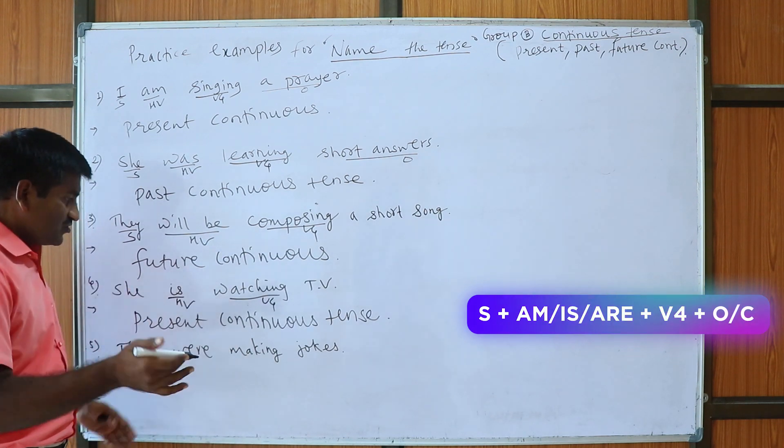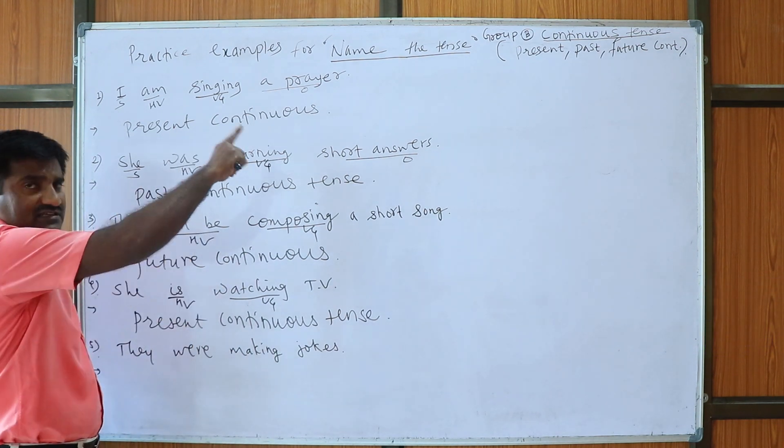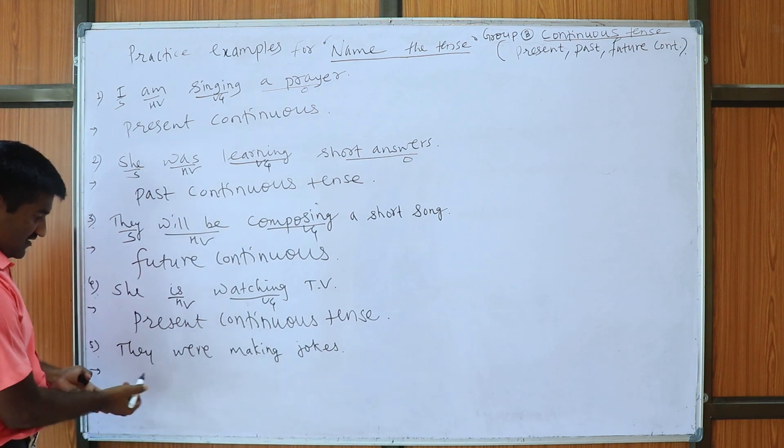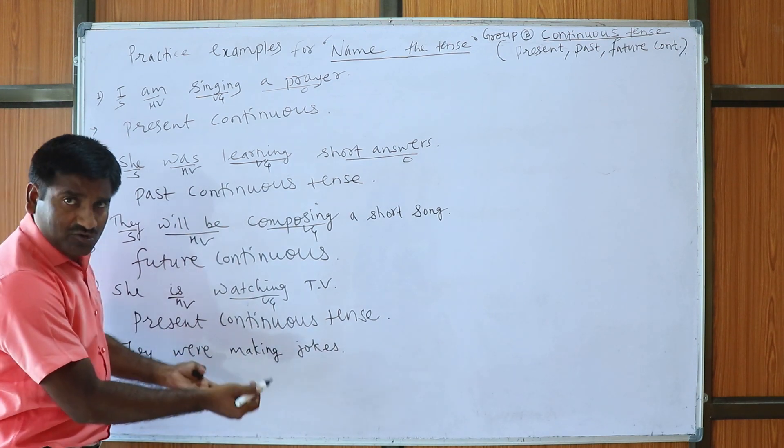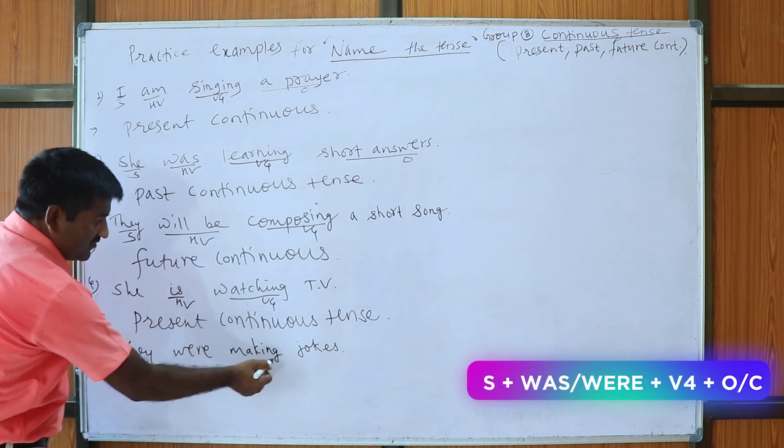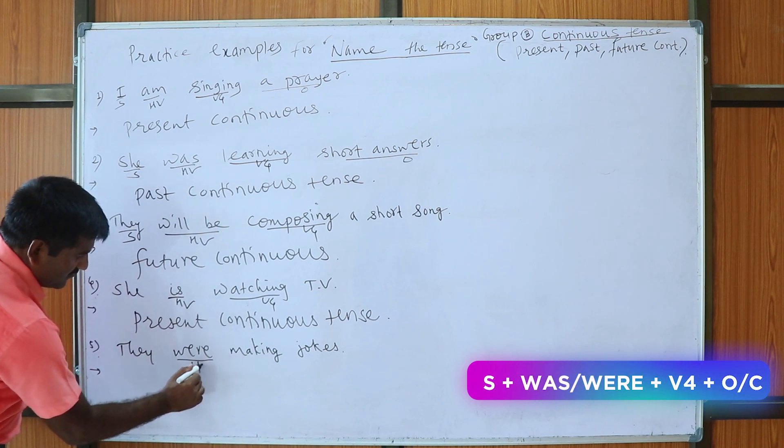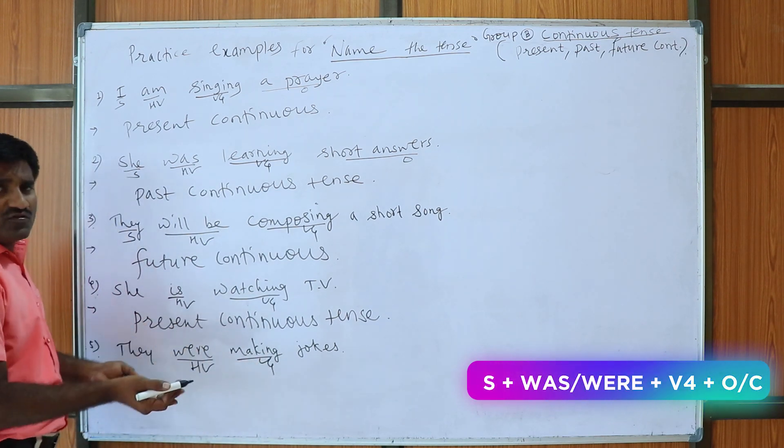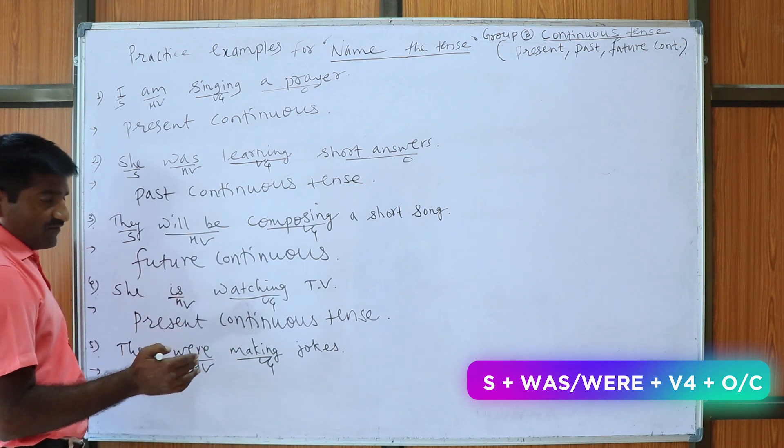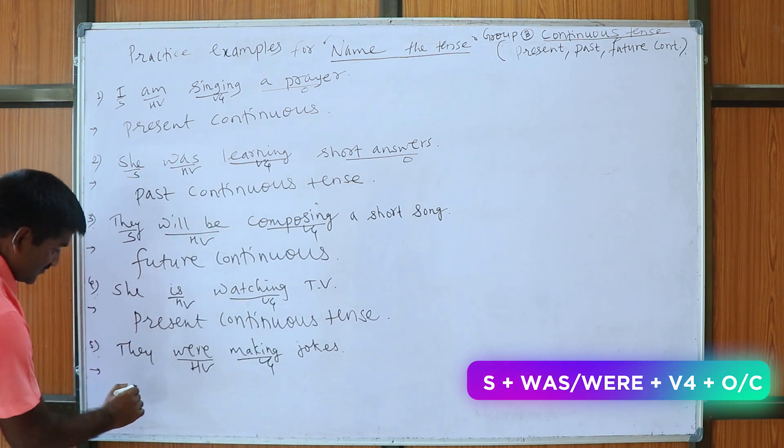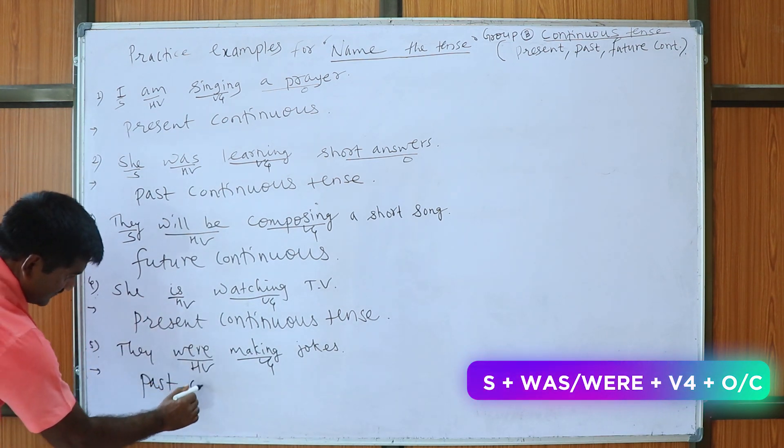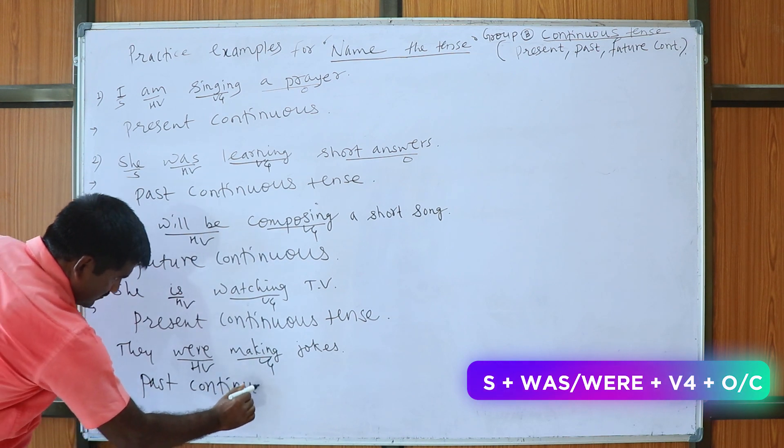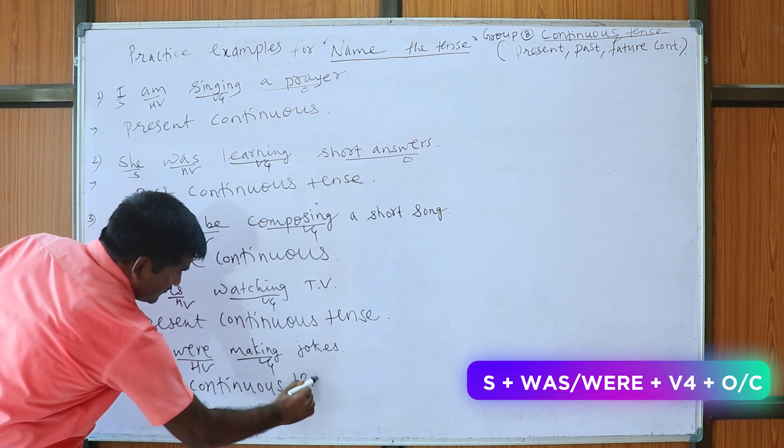The last example we have, they were making jokes, so was/were plus V4, were is your helping verb and this is V4, so was/were plus V4, this is the formula of past continuous tense, so the answer is here, past continuous tense. Past continuous tense.